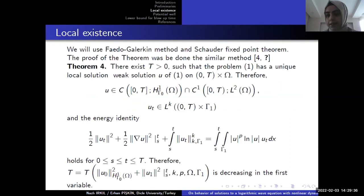The local existence, we give only the theorem, but we do not give the proof of this theorem in our presentation. We use the Faedo-Galerkin method and Schauder fixed point theorem for our proof. Our aim is to show that each norm can be bounded in a domain. And we can say our problem has a local existence for 0 to T.